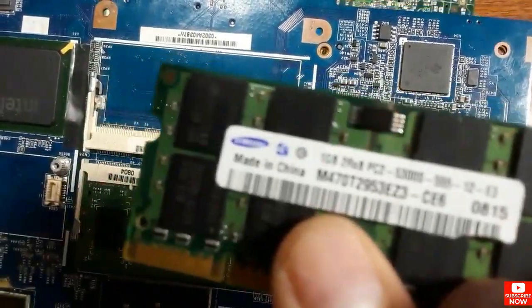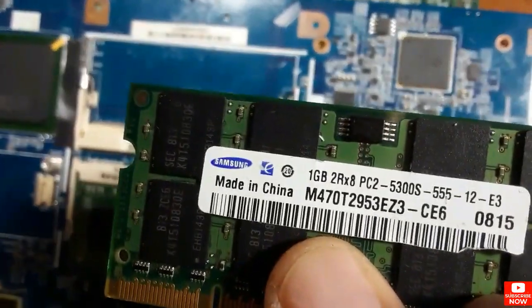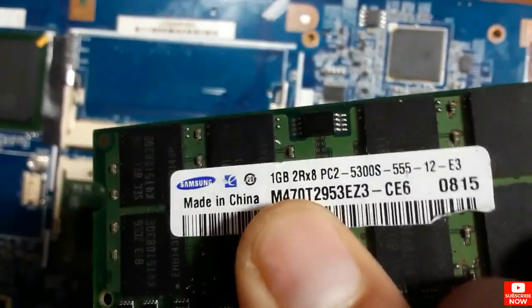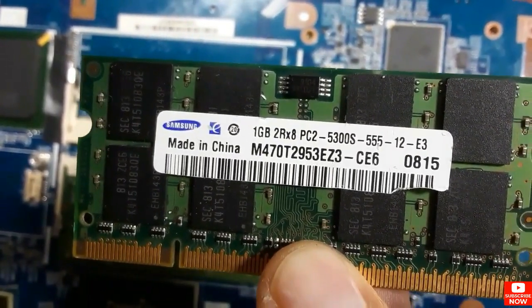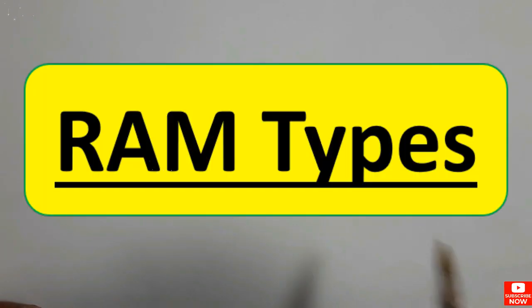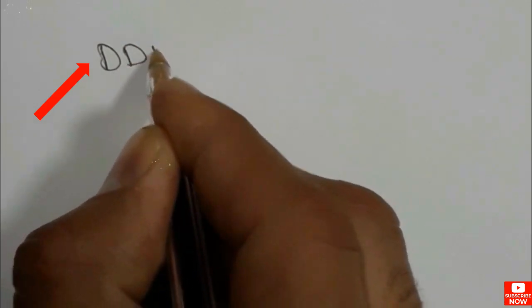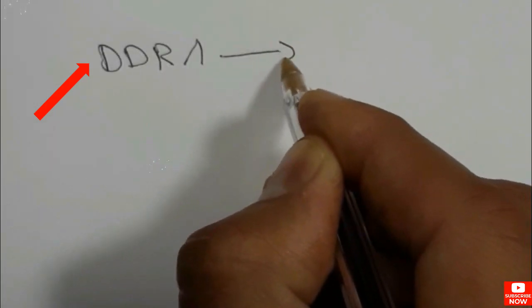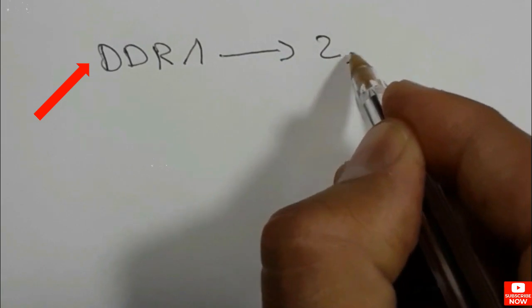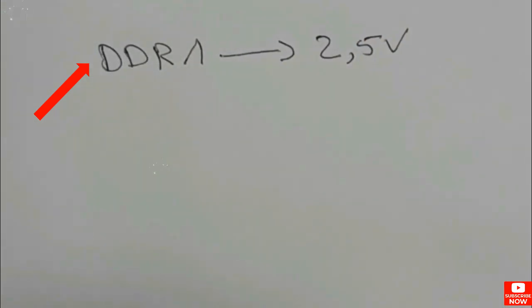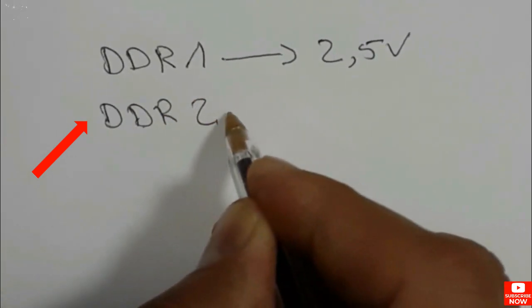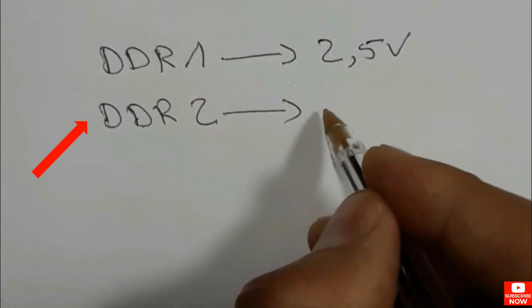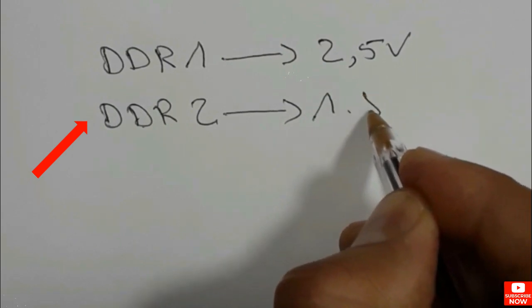To upgrade the random access memory in a laptop motherboard, you can only improve the size — for example, instead of 1 GB you can use 2 or 4 GB. The most common RAMs are: DDR1 with a working voltage of 2.5 volts, and DDR2 with a working voltage of 1.8 volts.